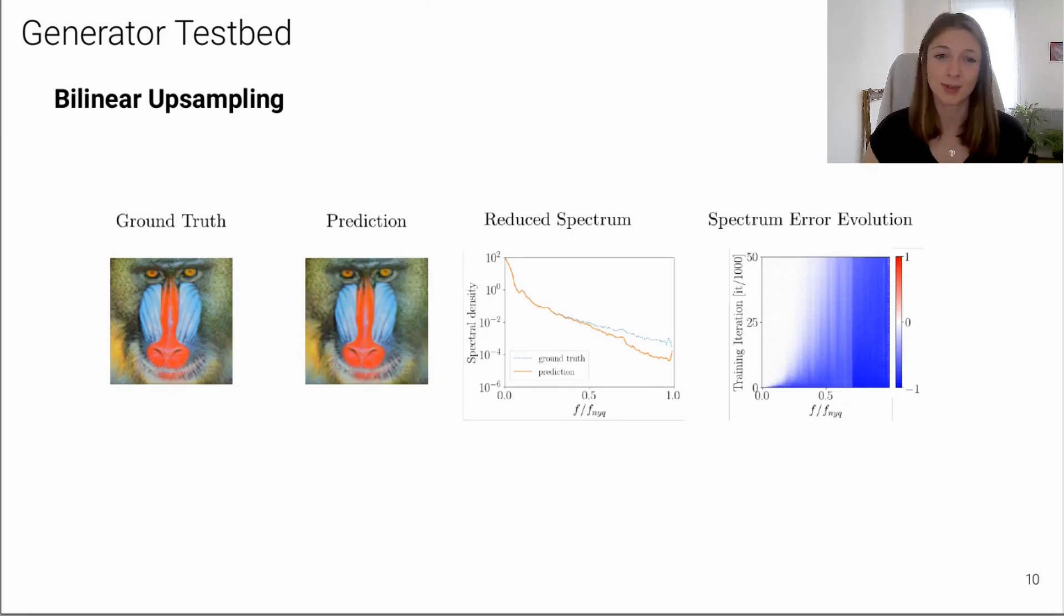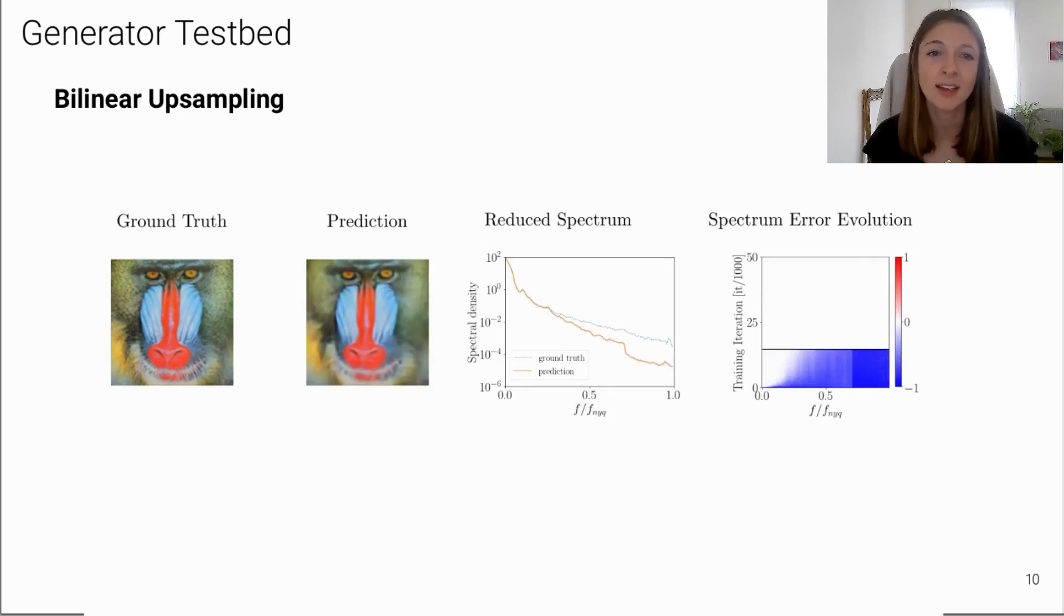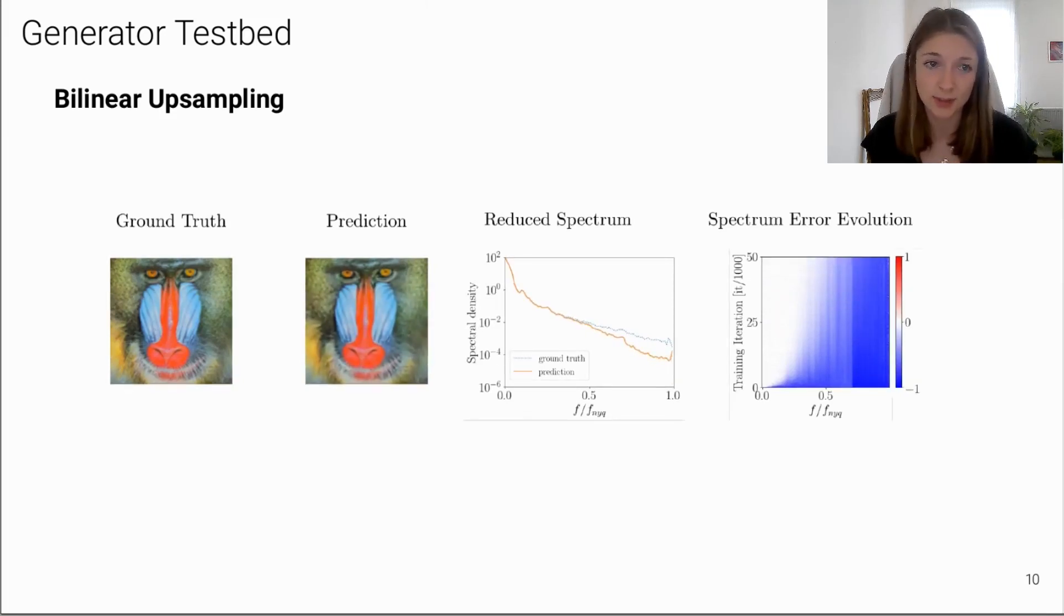Okay, so now let's see how this develops over the course of training. As you can see in the beginning, the reconstructed image is very blurry. Looking at the reduced spectrum, we can see that this corresponds to learning the low frequencies first. Further, with bilinear upsampling, the generator really struggles to generate the correct high frequencies at all. The spectrum error evolution also shows this bias towards predicting too little high frequencies as indicated by the blue color.